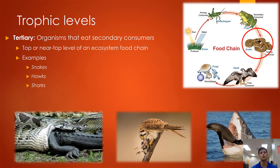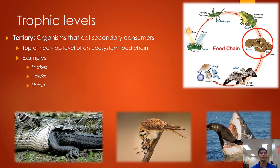Moving forward, we reach our tertiary consumers — organisms which eat secondary consumers, getting into some of your larger predators near or at the top of the food chain. Examples of tertiary consumers include snakes eating alligators, hawks which eat birds which eat insects, or a great white shark about to eat a seal.